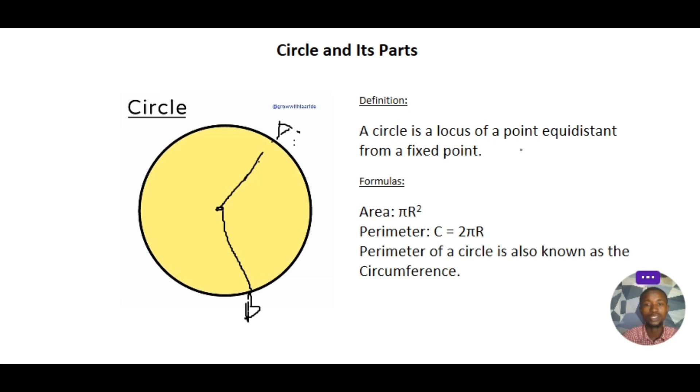So formulas: we can be asked to find the area and perimeter of a circle. Know that the perimeter of a circle is also known as the circumference. Area of a circle is πr², while the circumference of a circle is 2πr. Pi has a constant value of 22/7 or 3.14. Take note of that.